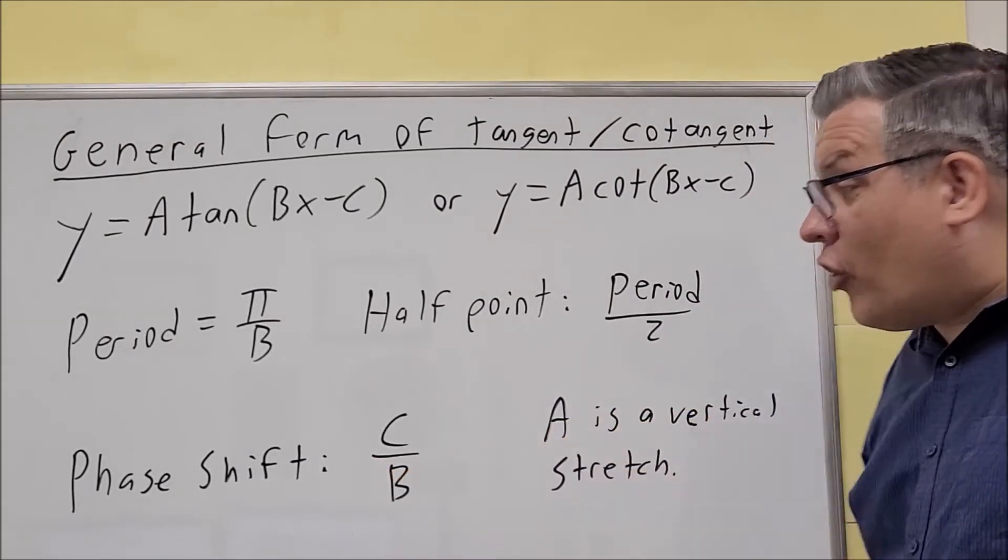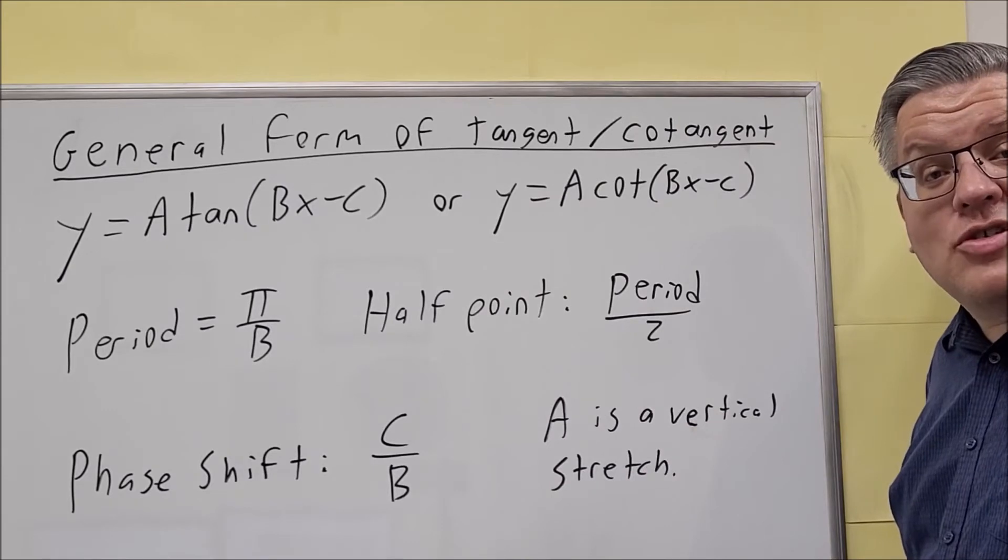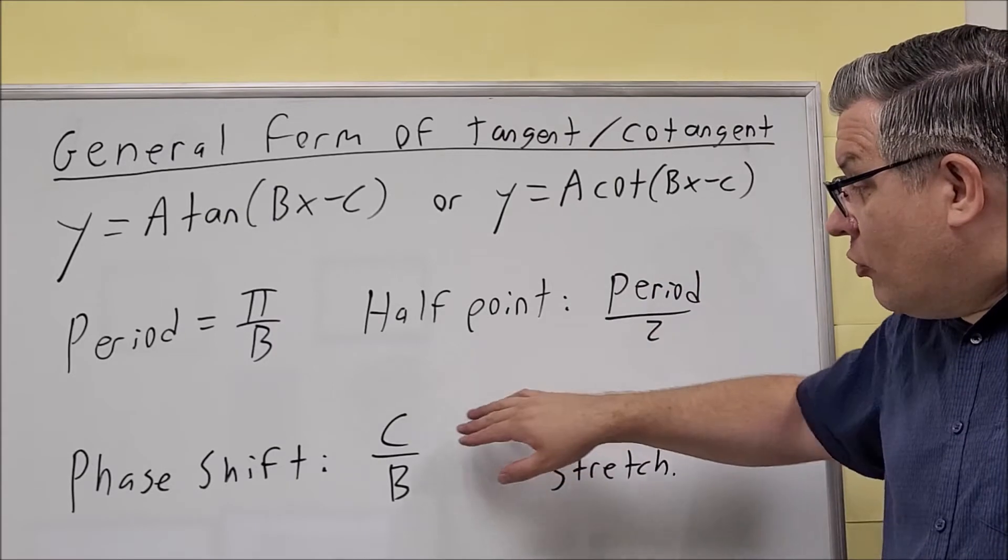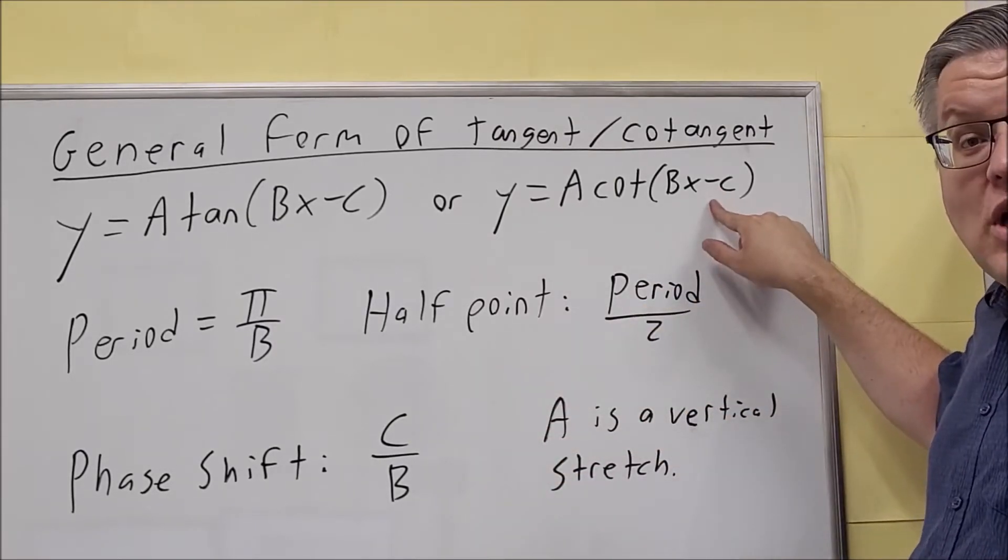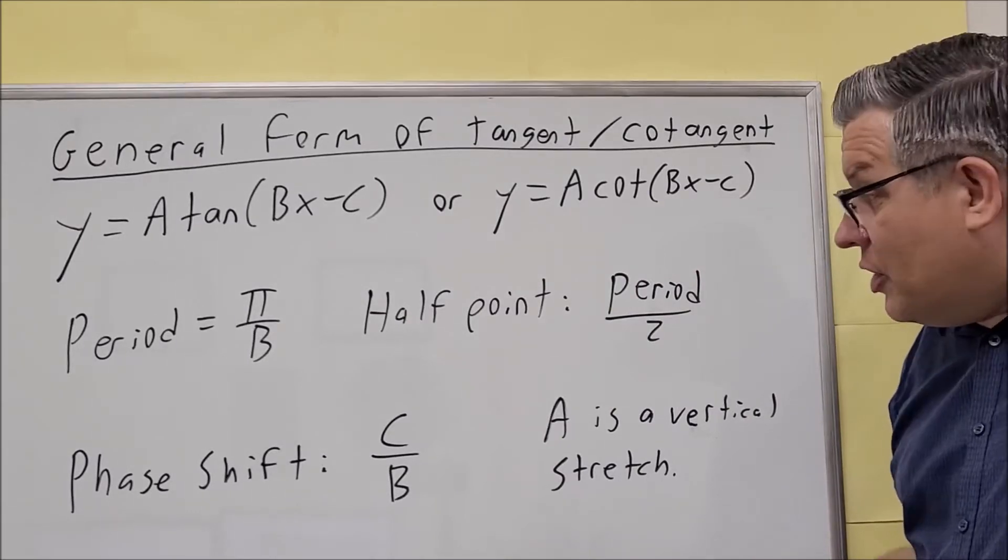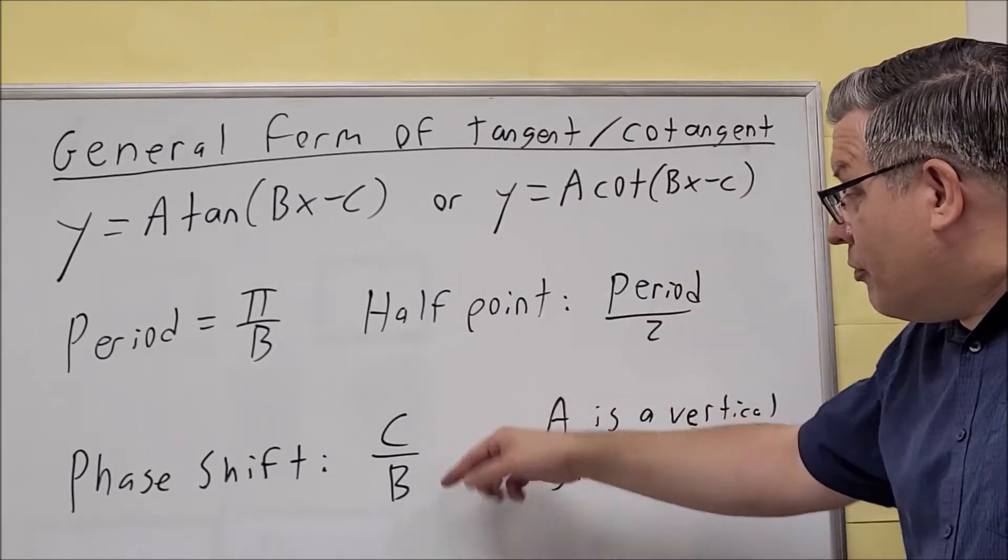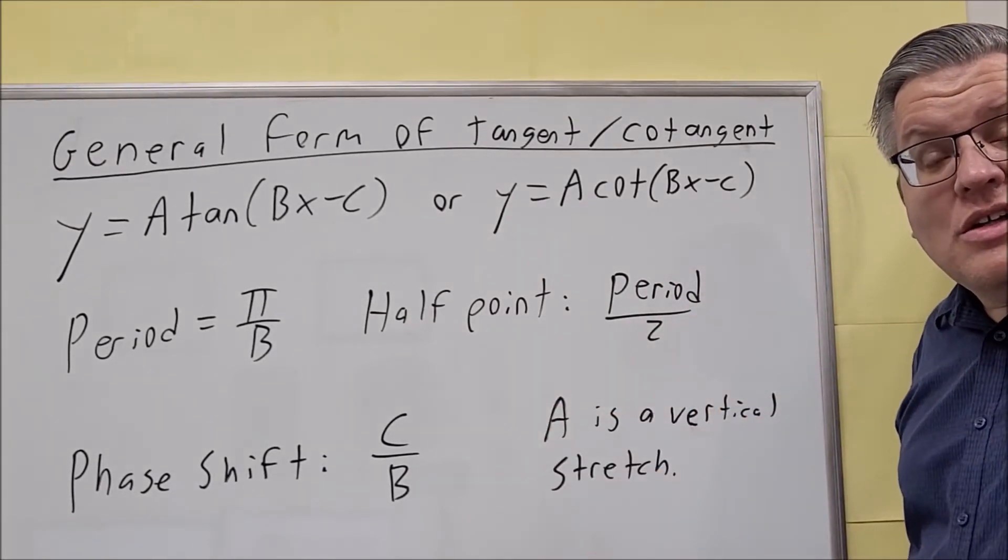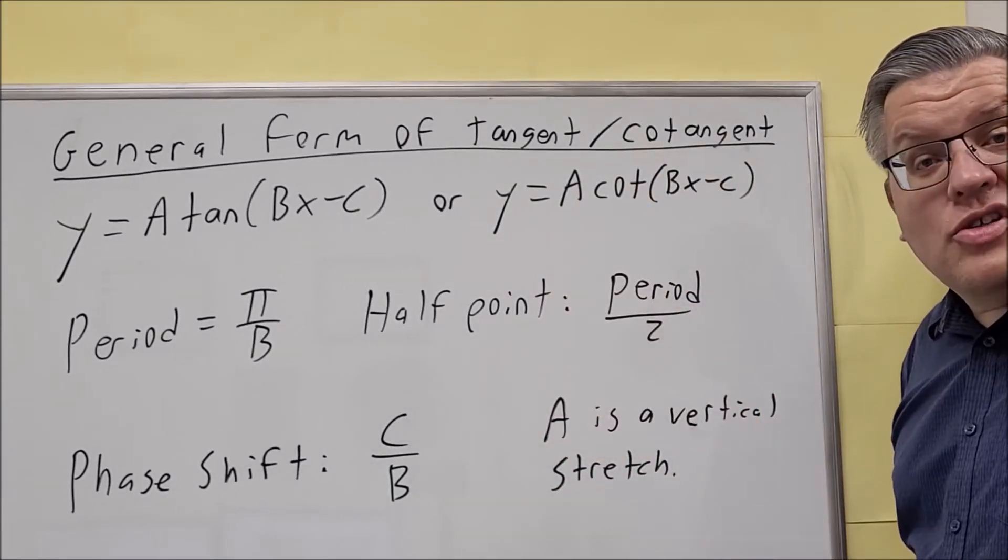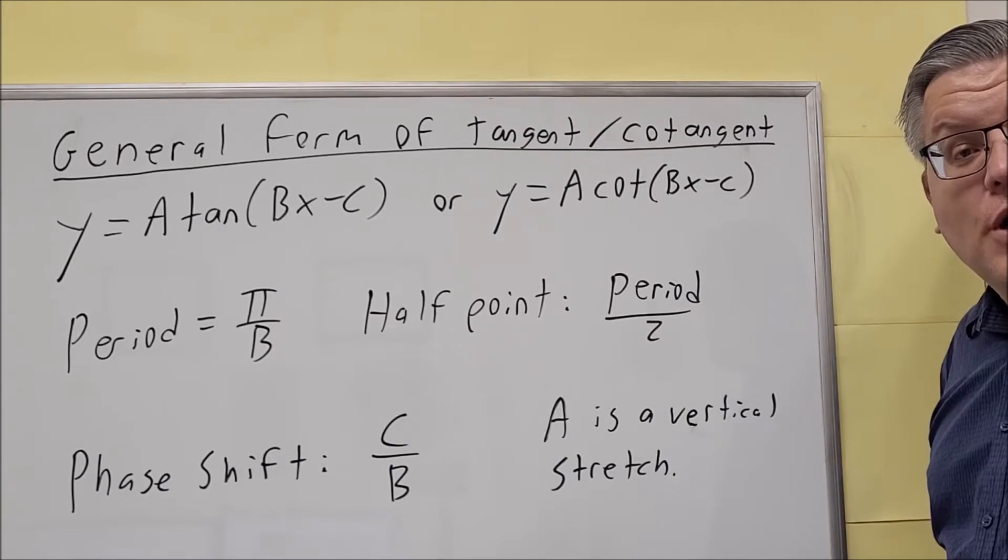Now the phase shift, the formula for phase shift is actually the same as it is for the sine and cosine graphs. It's c over b. Remember though that when you grab your c value, you're always going to take the opposite sign of what you see inside the formula. So it's going to be opposite sign of c over b, but the actual formula itself is c over b. So now that we've taken a look at all these formulas, next we're going to put them into practice by doing a couple examples.